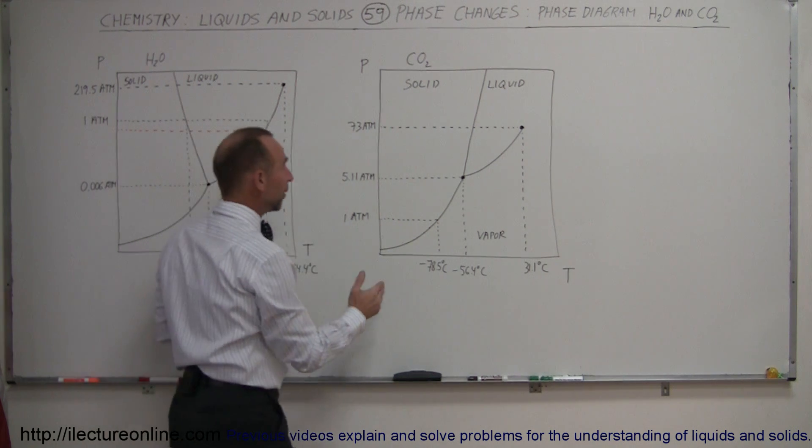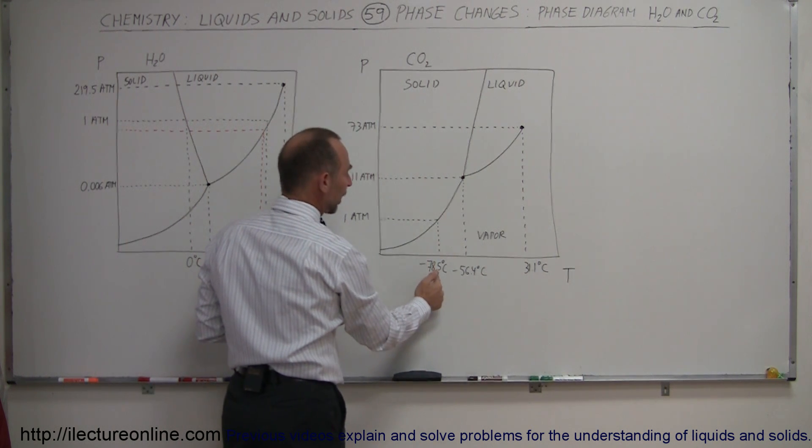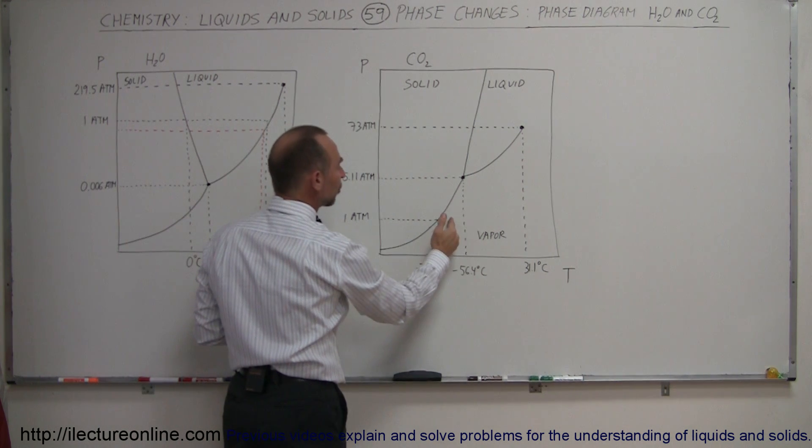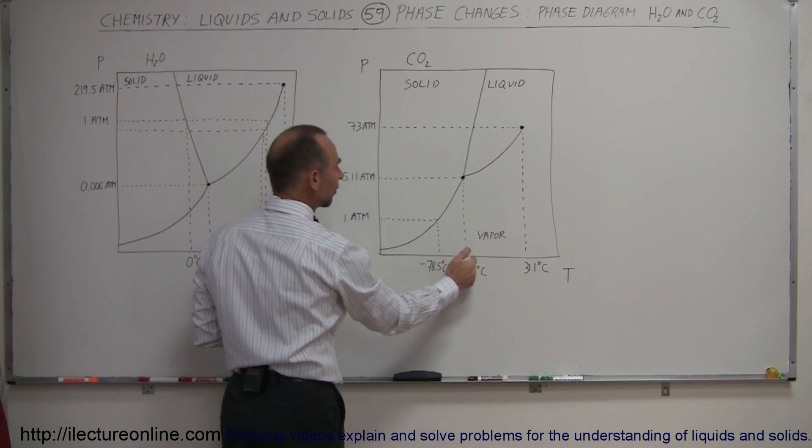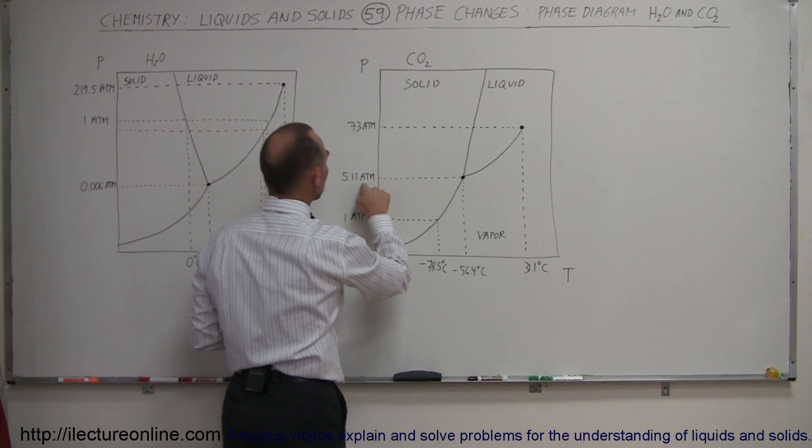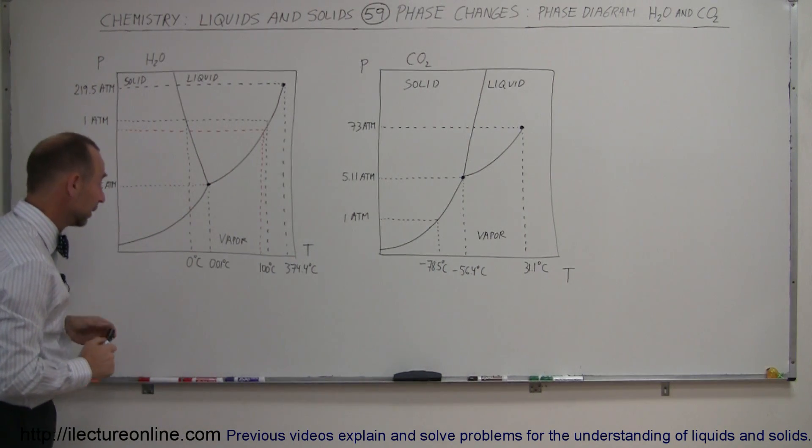Notice that in order to go from vapor to solid, at temperatures that are greater than minus 78.5 degrees, you just will require more and more and more pressure. At the point that you get to minus 56.4 degrees centigrade, you'll need a pressure of 5.11 atmospheres.